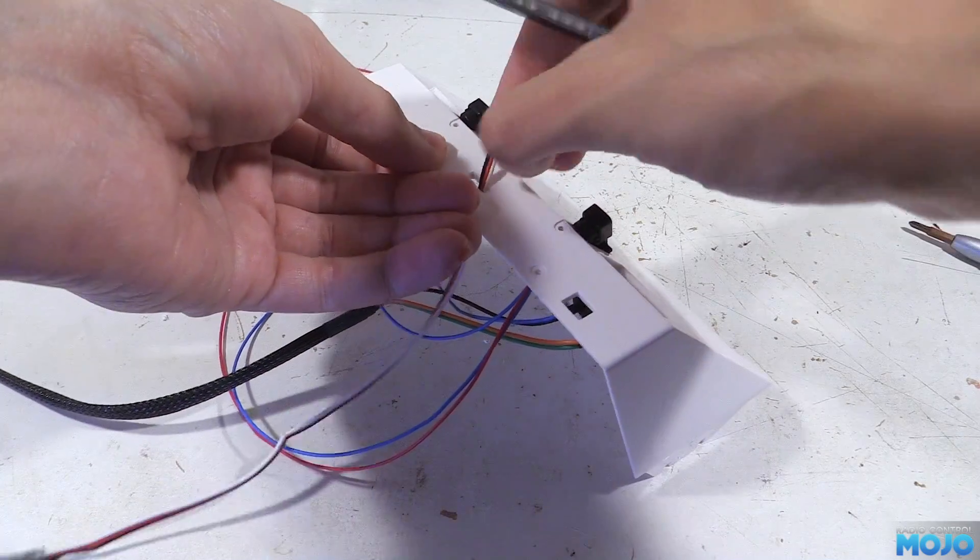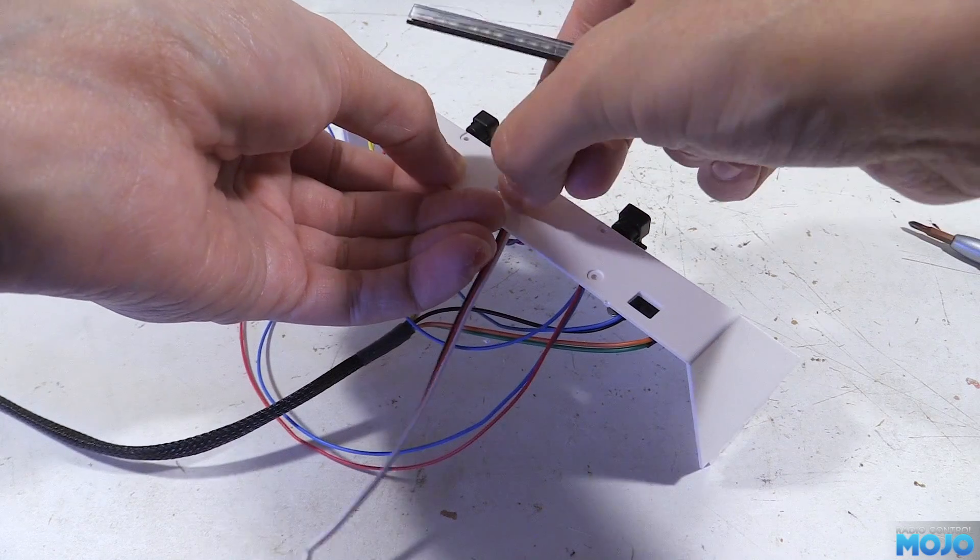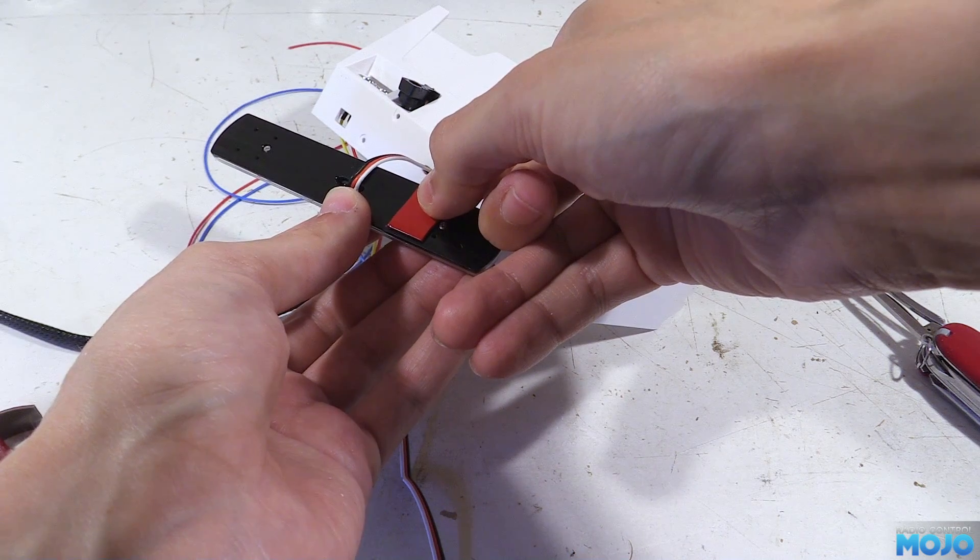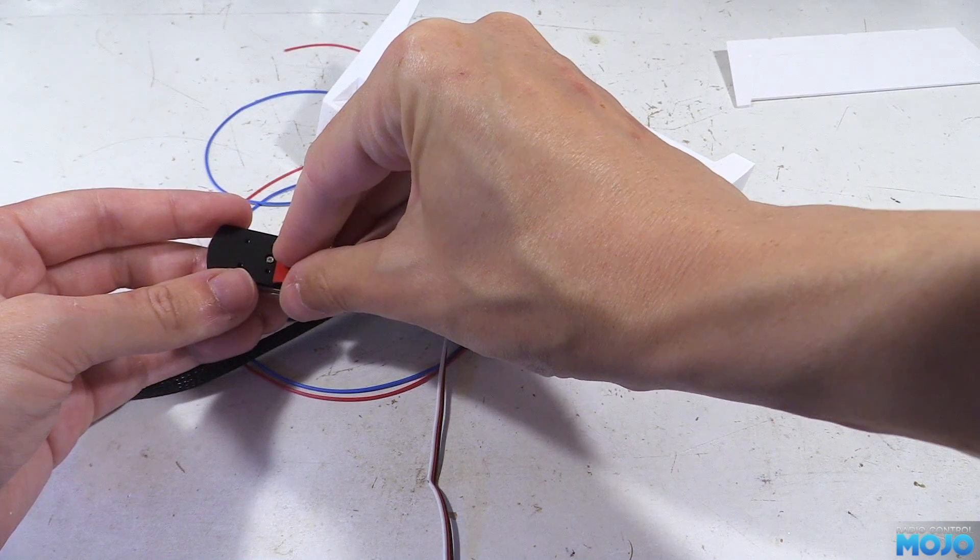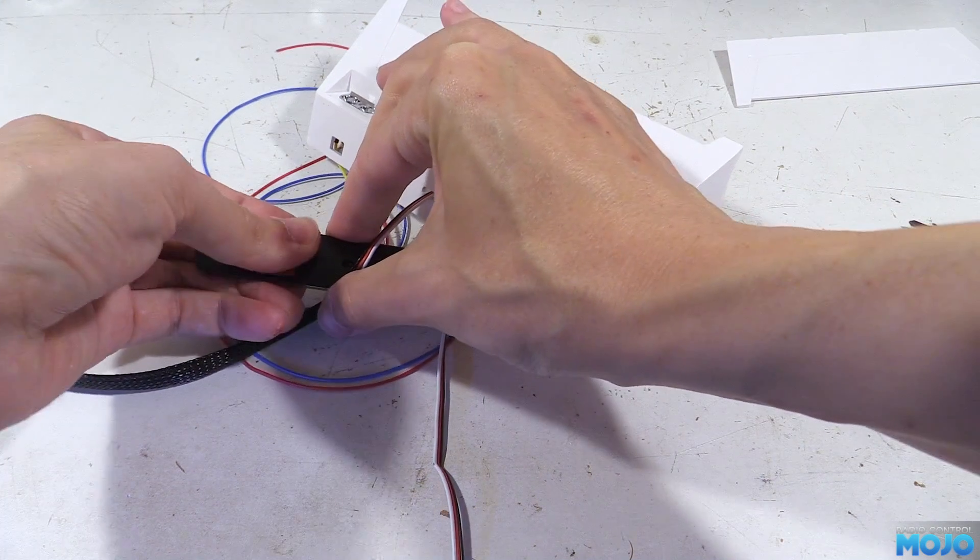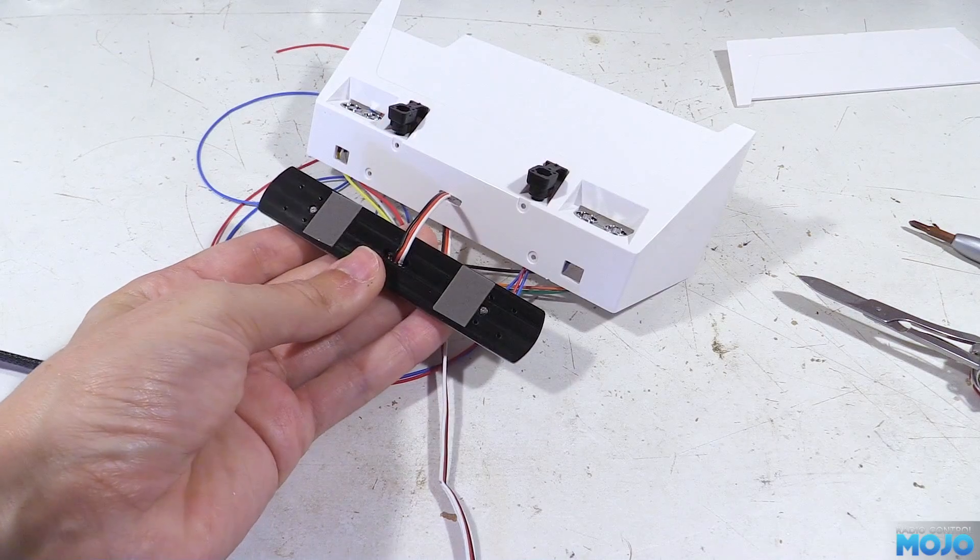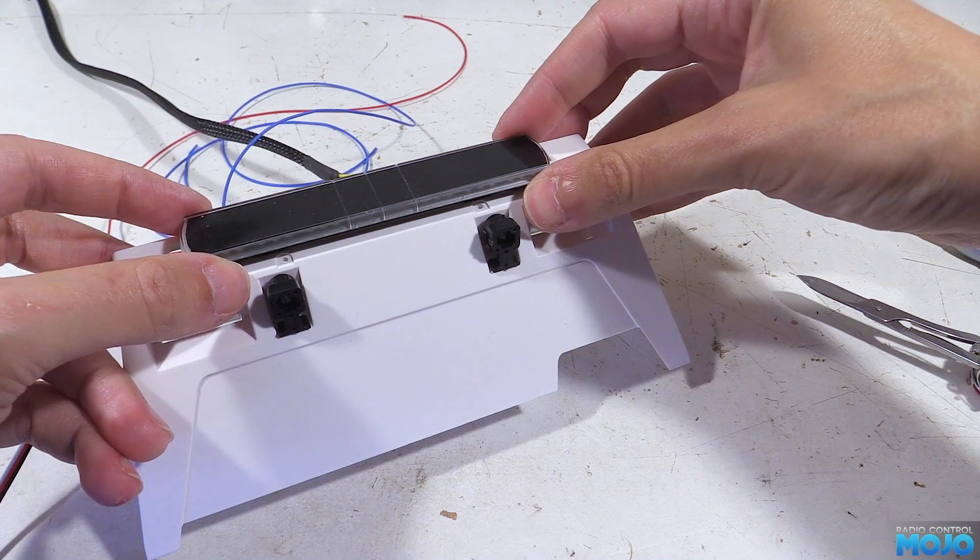Now we reassemble the beacon, run the wire through and pop it on the top of the box. Now the beacon does come with a pair of nice metal mounts but they're a bit too wide for the space. So to make it easier I'm just going to use a couple of small bits of servo tape.